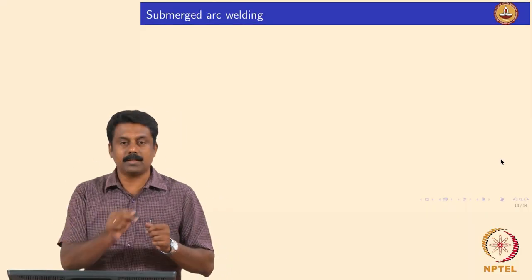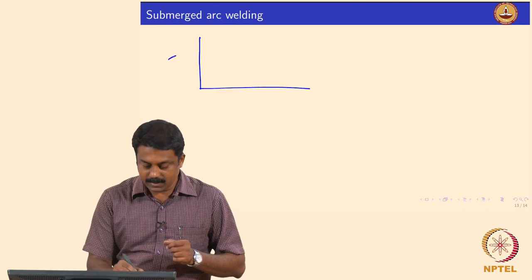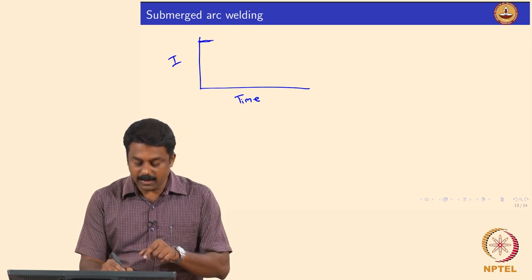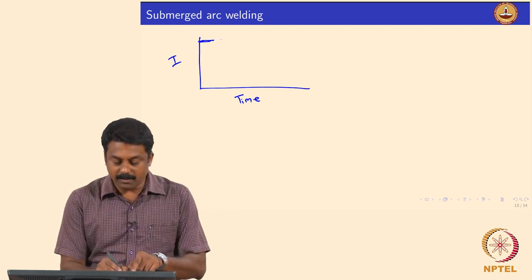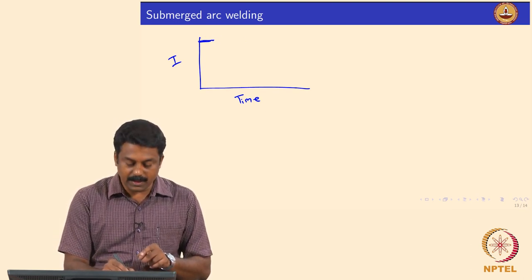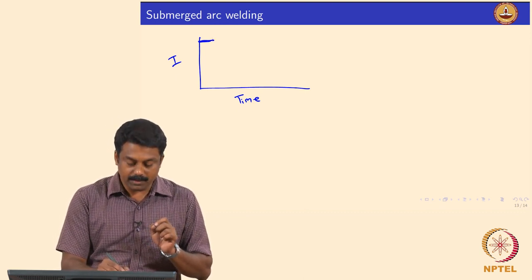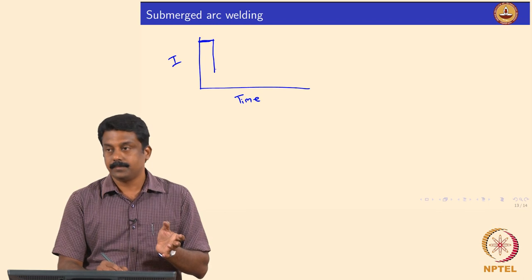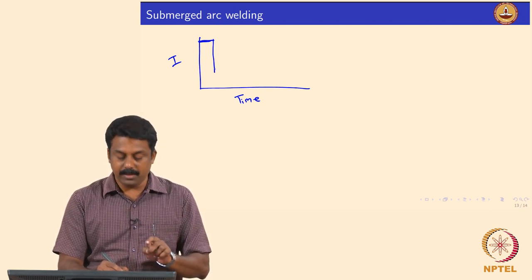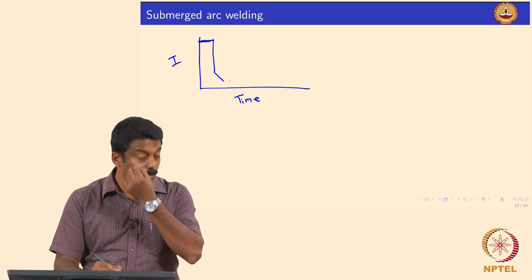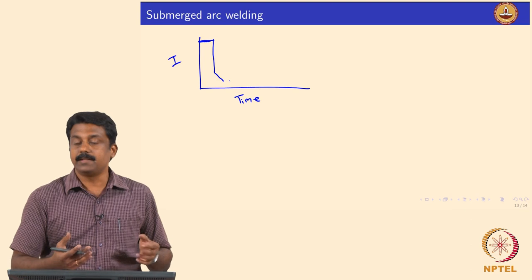For example, in controlled short circuiting transfer, when you look at the current versus time waveform, it is not like a simple pulse or simple DC. Initially we have an arcing current, and we do not keep the current constant throughout, nor do we do simple pulsing. Upon achieving a droplet at the electrode tip, the wire is moved toward the weld pool and during this process the current is also decreased. The moment short circuiting is established, we reduce the current to a very low level — sometimes even to zero — so that the droplet is not exploded because of the accumulation of the Lorentz force inside the droplet.